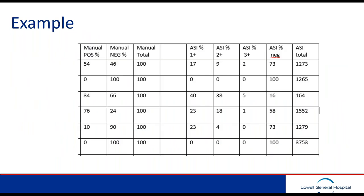This is an example of the table I created during the study. For manual evaluation I did not try to differentiate 1+, 2+, or 3+, but in the image analysis algorithm — which was very similar to HER2 — that information was included. Also, as you can see on the right-hand side, the total number of tumor cells analyzed by image analysis is much higher than the 100 cells I analyzed by manual evaluation.